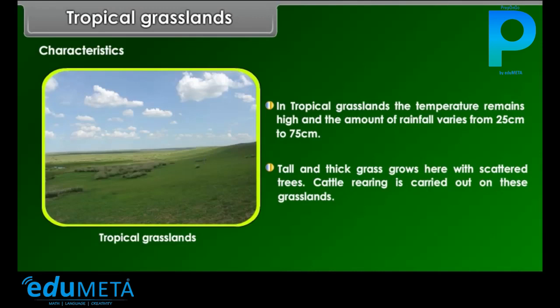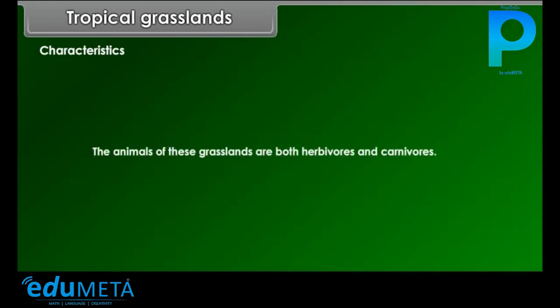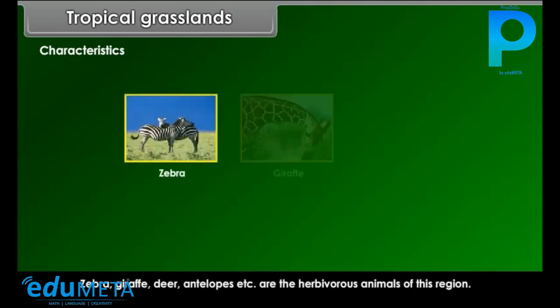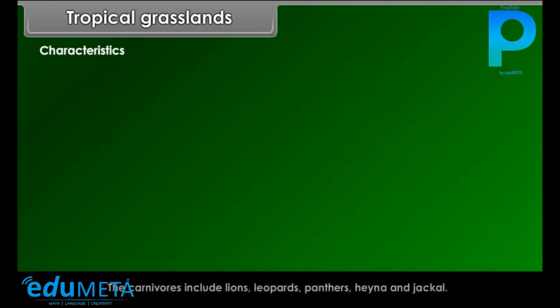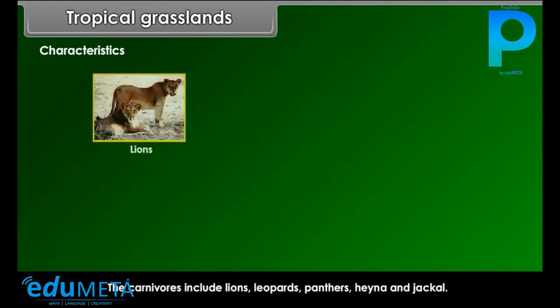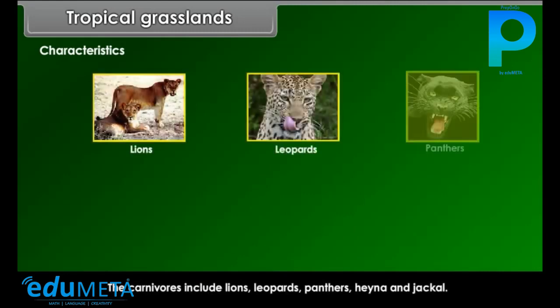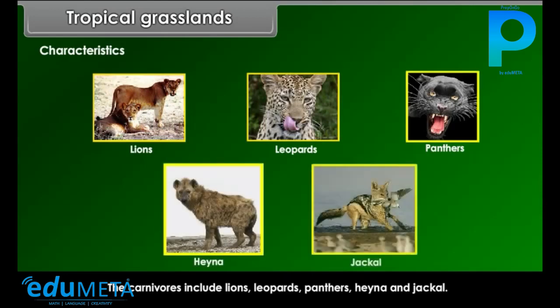The animals of tropical grasslands are both herbivores and carnivores. Zebra, giraffe, deer and antelopes are the herbivorous animals of this region. The carnivores include lions, leopards, panthers, hyena and jackal.